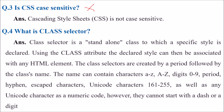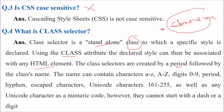What is a class selector? A class selector is a standalone class to which a specific style is declared. Using the class attribute, the declared style can then be associated with any HTML element. Class selectors are created by a dot followed by the class name. The name can contain characters A to Z, digits, period, hyphen, escape characters, and unicode characters 161 to 255, as well as any unicode character as an escape code. However, they cannot start with a dash or a digit.